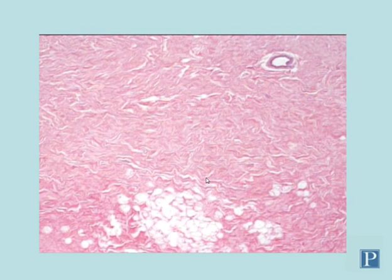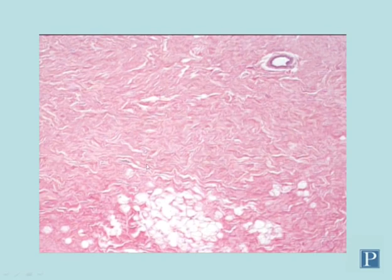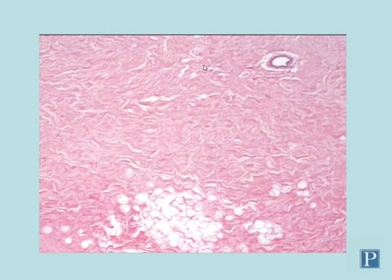Finally, we'll look at the mammary glands, which we're including as part of the integument. This is an inactive mammary gland composed mostly of adipose tissue and dense irregular connective tissue with very little glandular epithelium — you can see one duct but it's very scant. This is what mammary tissue looks like from a woman who is not actively nursing or pregnant.